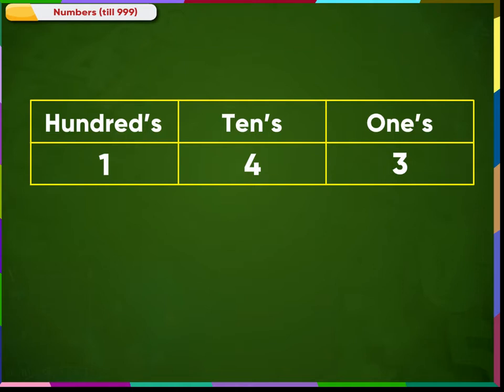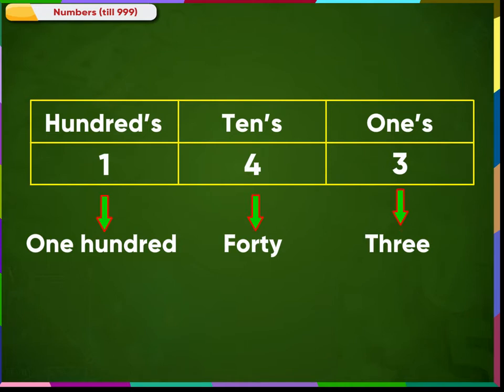When we read a number, we always start from leftmost place. So this number here is read as 100. Now in the tens place, there is the number 4, which means 40. We write here 40. And this number is 3, so we just write 3.